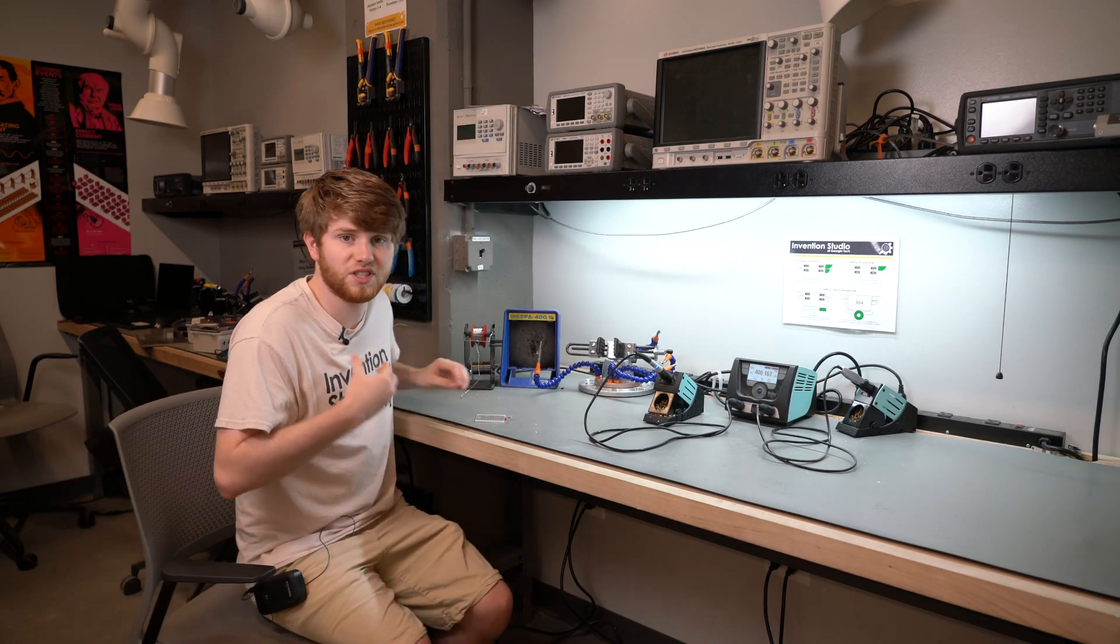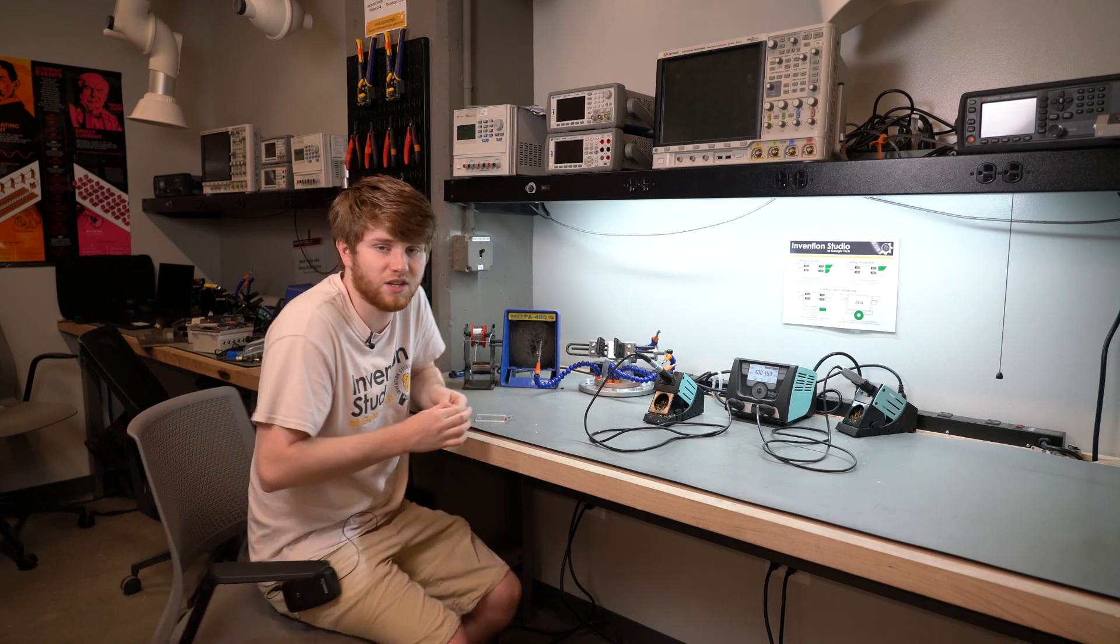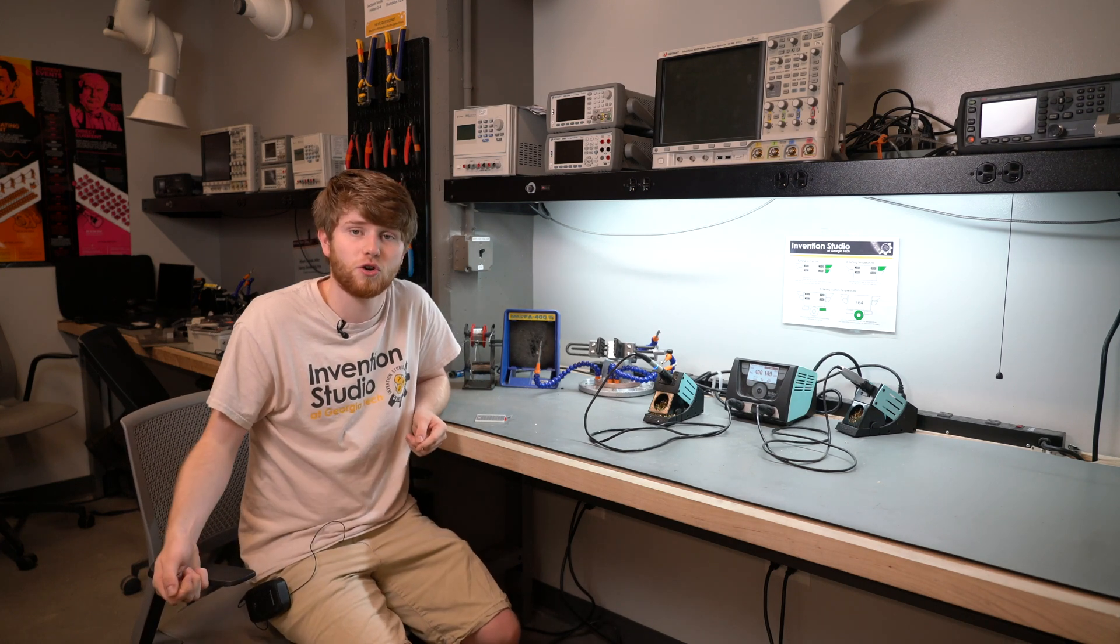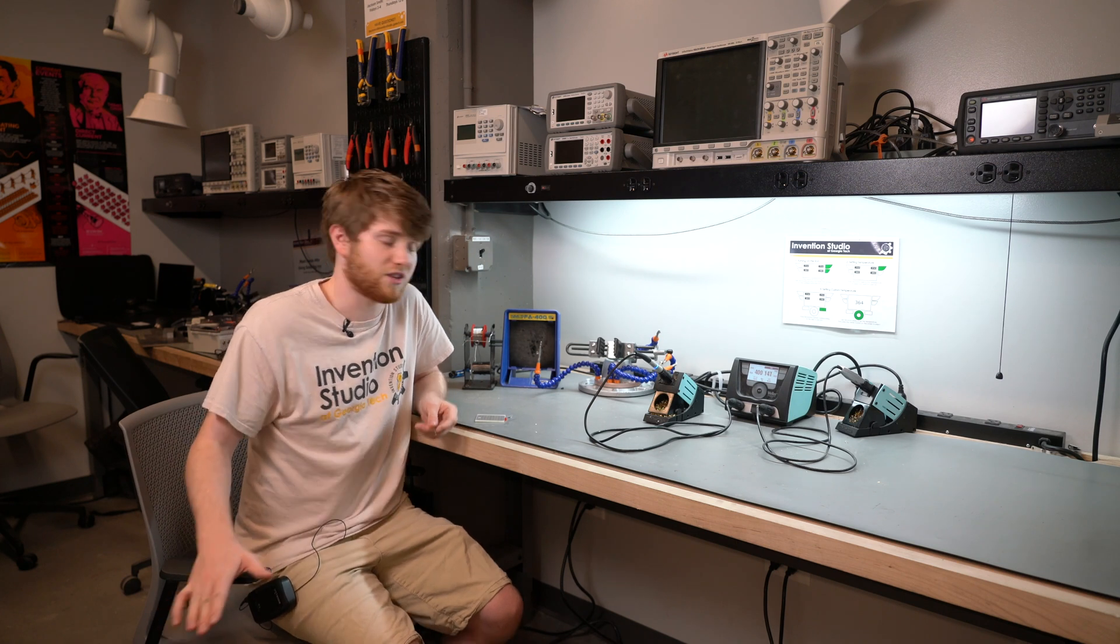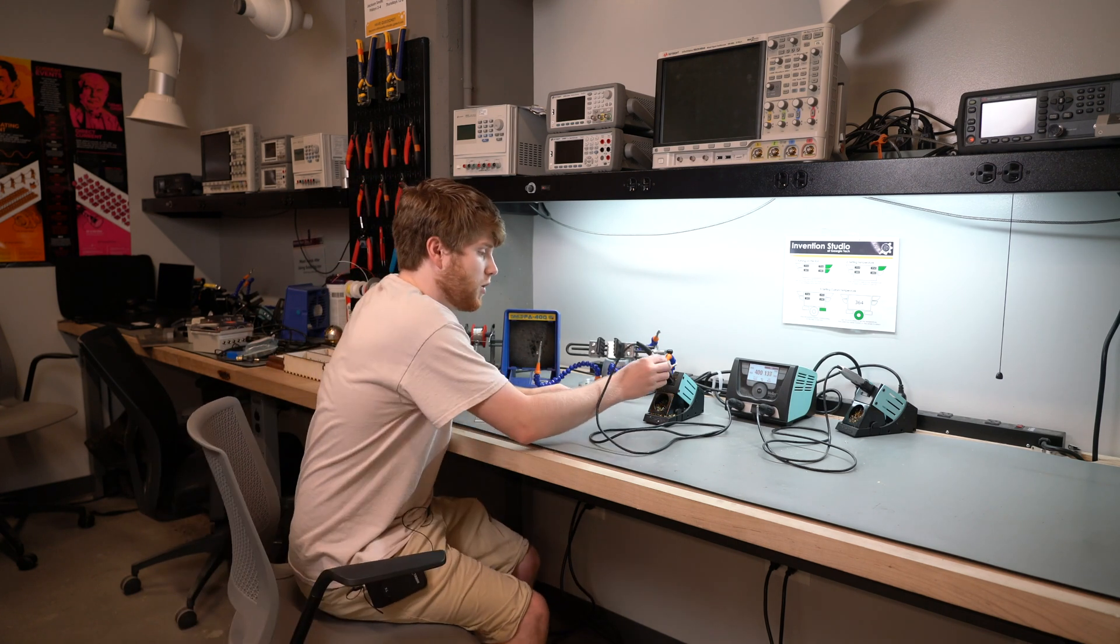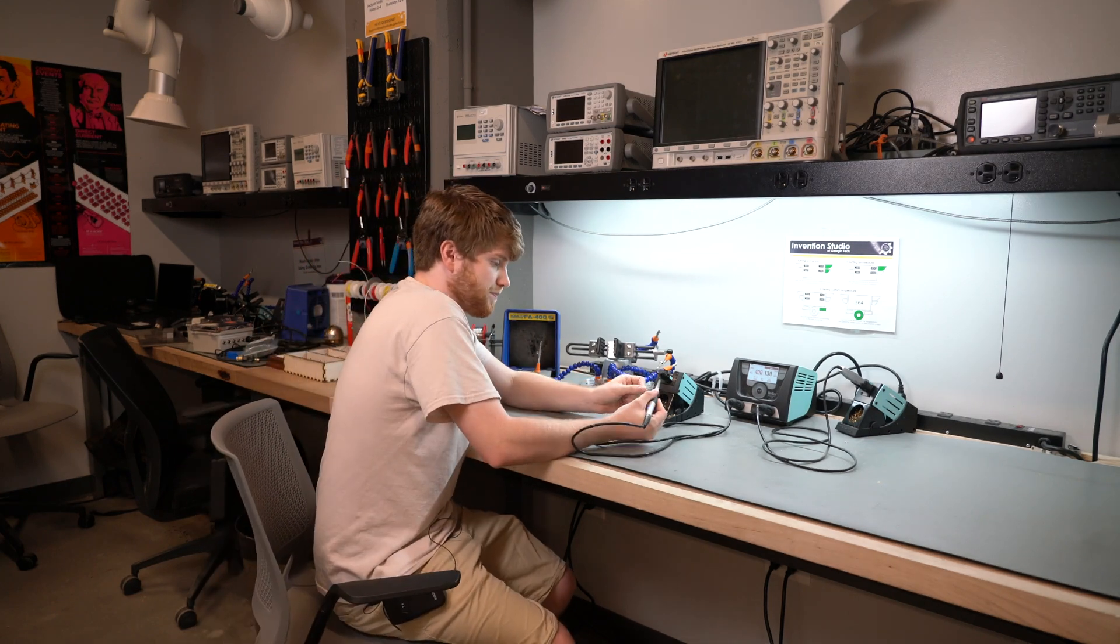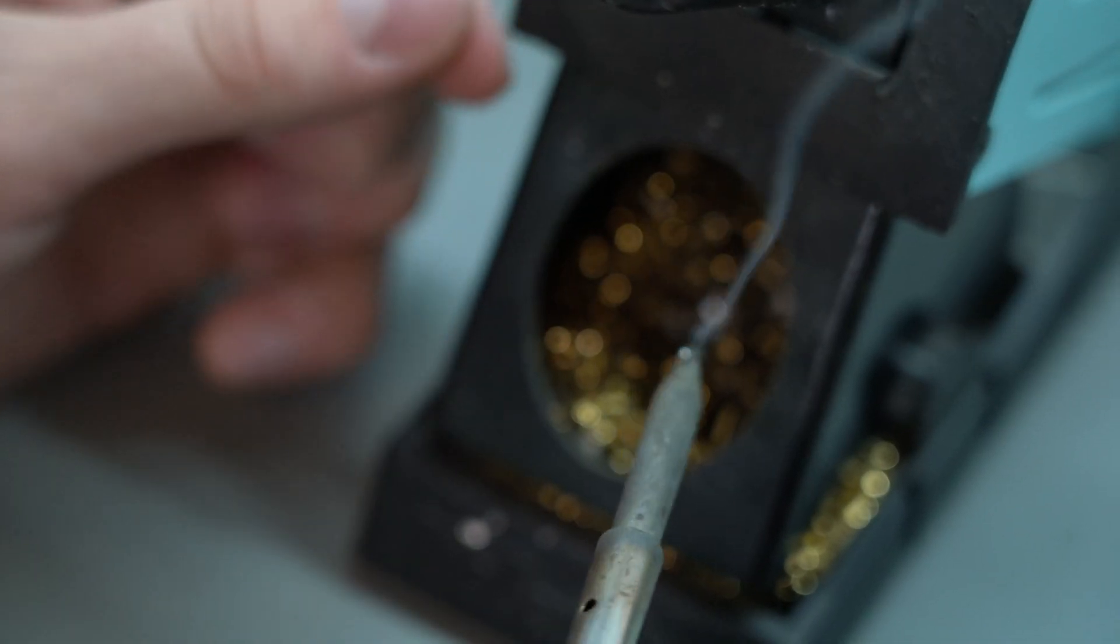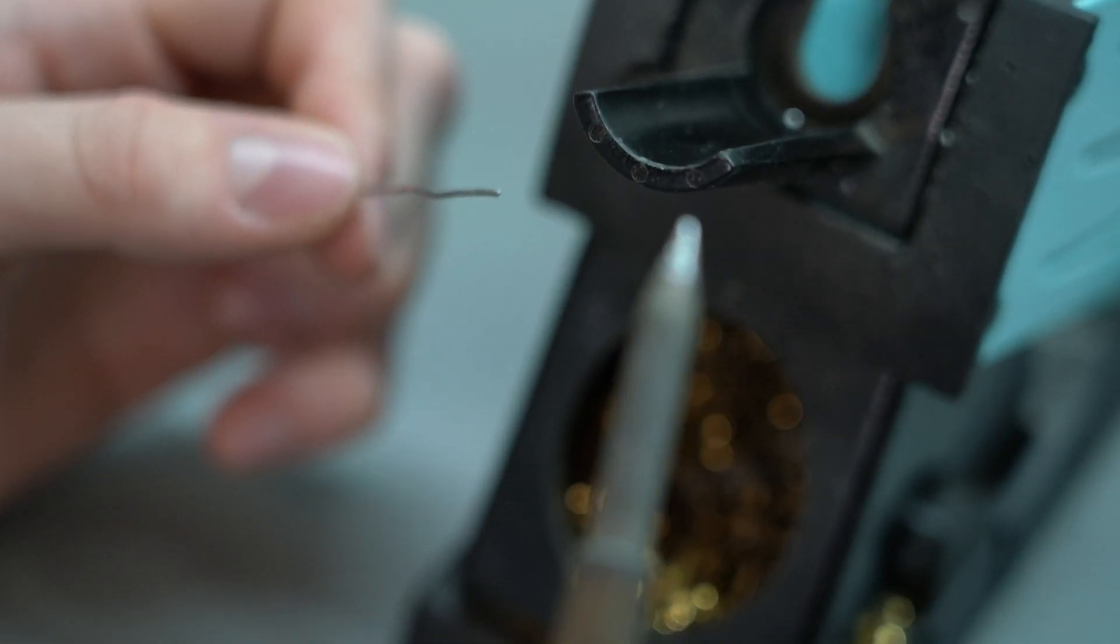Once the soldering iron has been turned on, you want to tend the tip of the soldering iron. Tending the tip helps extend the tool life and makes the solder joints you will make with the iron a bit more consistent and better joints. How to tend the tip is you tear off a piece of solder here, melt a small amount of solder on the end of the iron, and rub it in the steel wool until there's a nice coating along the end of the iron.